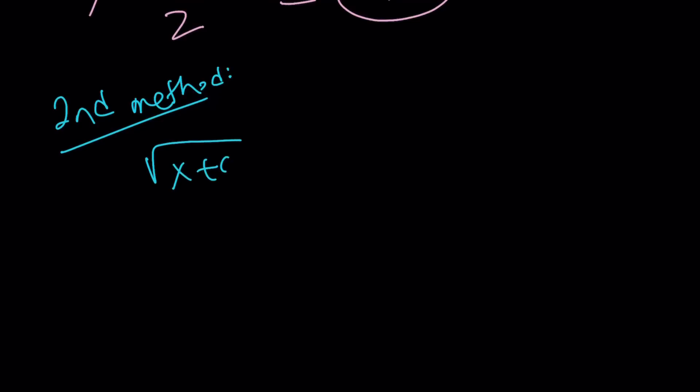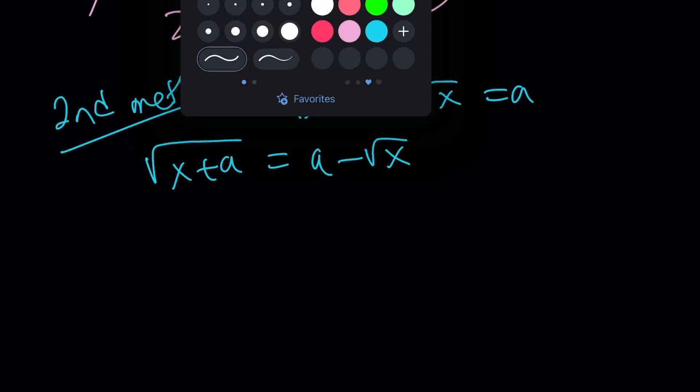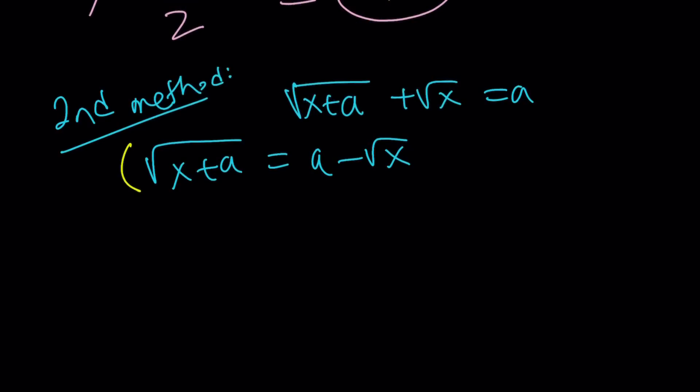Alright, so we have the following. This time I want to... Oops, I forgot to write the original problem. So this is what we're given. And then I want to isolate the square root of x plus a this time. And then square both sides like before. Same thing.